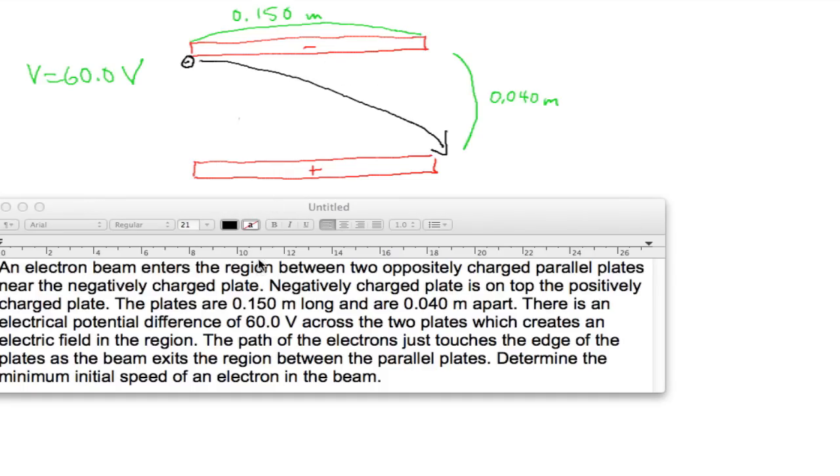Okay, so I set up the diagram for this question. The electron is starting near the negatively charged plate, and as it leaves this electric field it barely touches the positively charged plate.